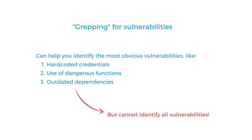Another vulnerability to look for is the unchecked use of dangerous functions. Search the code base for dangerous functions and see if any of them are reachable by user-controlled data. For example, you can search for strings like system or eval for potential command injections. You can also browse through your dependencies to see if any of them are outdated.